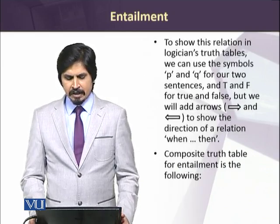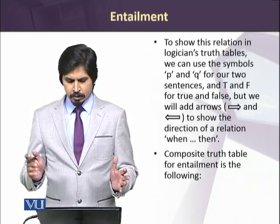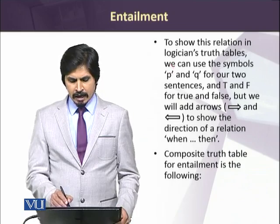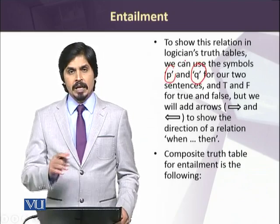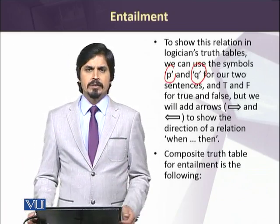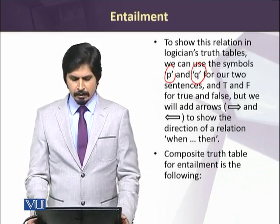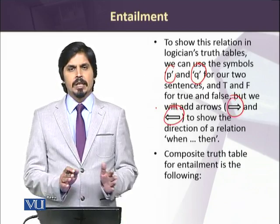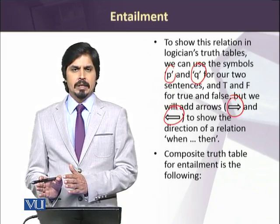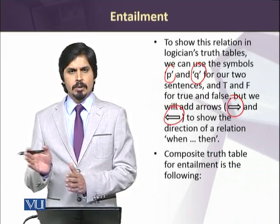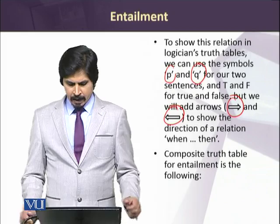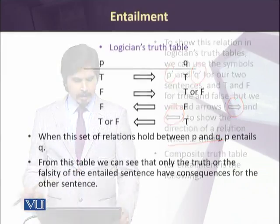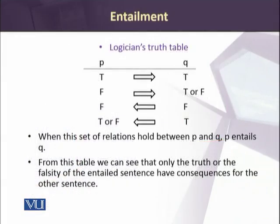To show this relationship in a logician's truth table, we use certain symbols — we use the letters P and Q for the two sentences which have the relationship of entailment, and we use arrows to show the direction of the argument, indicating whether P is leading to Q or Q is leading to P. Let's move forward to the truth table of entailment.